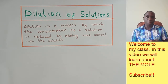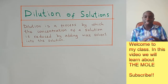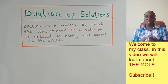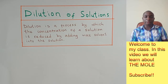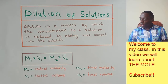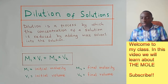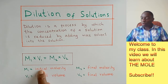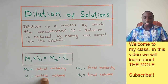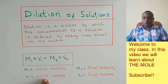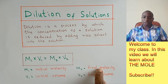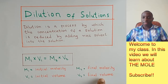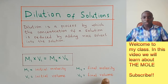In chemistry, the concentrations of solutions are given by moles per liter — that is molarity. There is an interesting formula that is always applied when talking about dilution: M1 times V1 is equal to M2 times V2. This means the initial molarity multiplied by the initial volume equals the final molarity multiplied by the final volume.